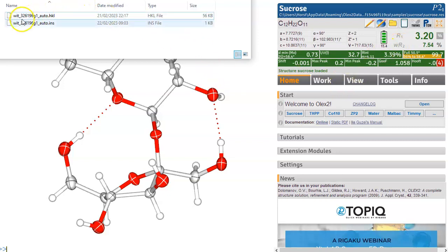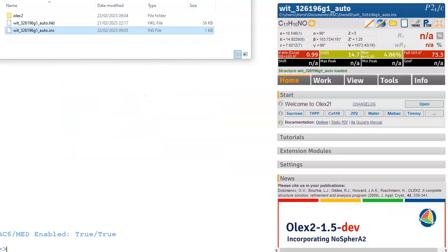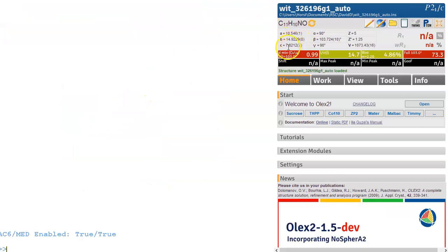Let's look at a little structure. We've got an ins and an hkl. Normally there would be some other files, the files that contain some metadata about the data collection. Let's not worry about this right now. So all I need to do is drag the ins file into Olex2. So what that does, it opens that ins file and it gives me straight away some information.